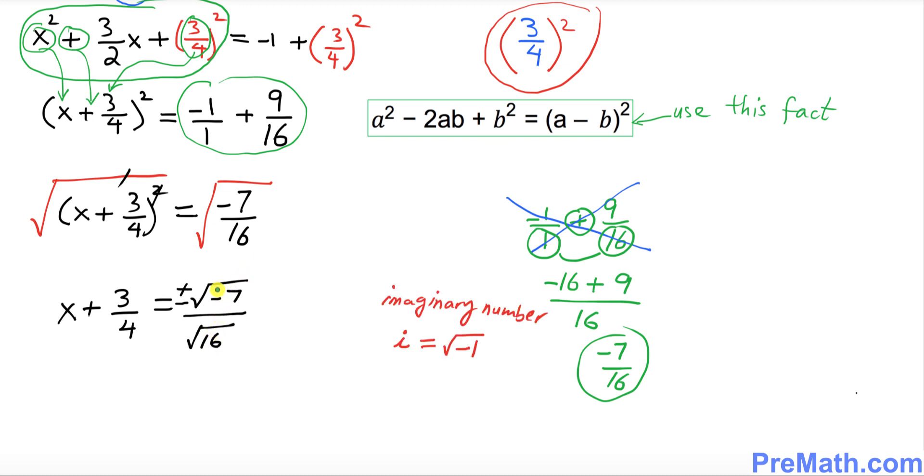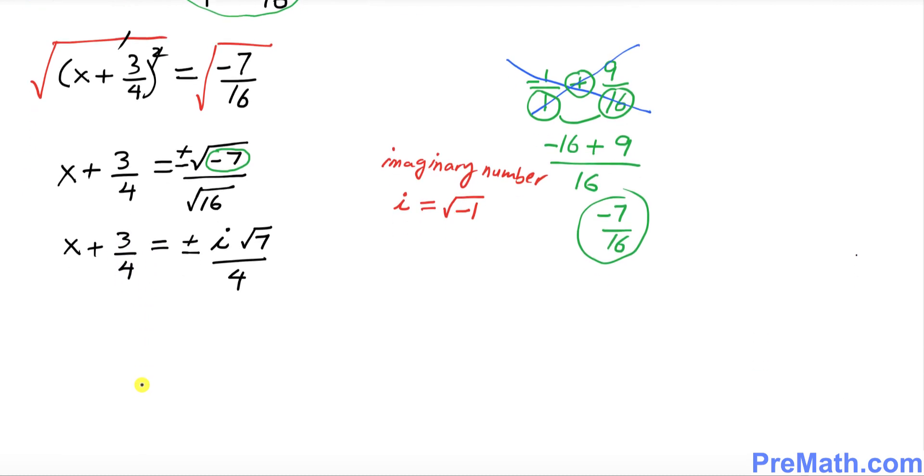Now I want you to notice one thing. Whenever you have a negative number or negative sign in that radical, it simply becomes an imaginary number. So I can write this right hand side as positive or negative i times square root of 7, divided by square root of 16 is 4, and on the left hand side is x plus 3 over 4.